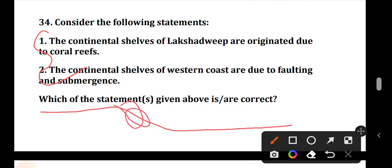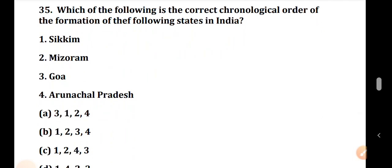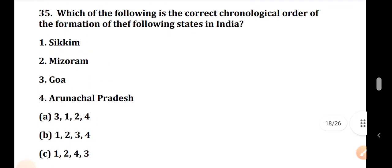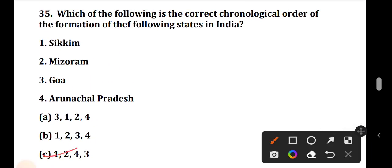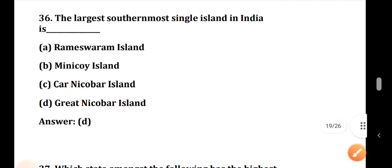Question number 35: Which one of the following is the correct chronological order of formation? The correct chronological order is 1, 2, 4, 3 — meaning 1 Sikkim, 2 Mizoram, 4 Arunachal Pradesh, 3 Goa. The correct option is C.